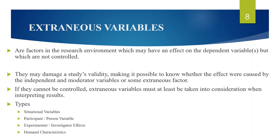The third type is experimenter or investigator effects. The experimenter unconsciously conveys to participants how they should behave during the research — that is called experimenter bias. The researcher might do this by giving unintentional clues to the participants about what the experiment is about and how they expect them to behave, which affects the participant's behavior. The experimenter is totally unaware of the influence which he or she is exerting, and the cues may be very subtle but they may have an influence nevertheless. Also, the personal attributes of the researcher like age, gender, accent, and behavior can affect the behavior of the participants.